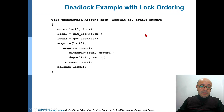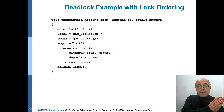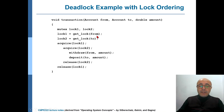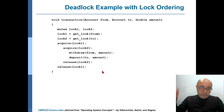With lock ordering, how can we proceed? Consider a bank transaction: we have two locks, one for the source account and one for the destination account. To transfer an amount from account A to account B, you acquire the locks in order — from account first, then to account — transfer the money by withdrawing from one and depositing into the other, then release the locks. This looks fine because the locks are acquired in an ordered manner.